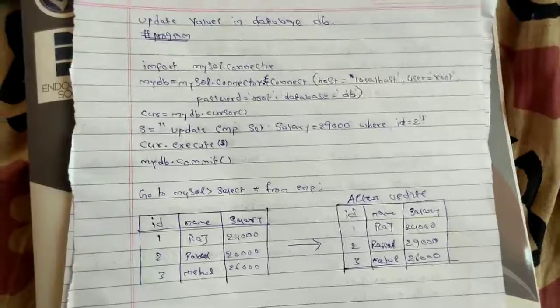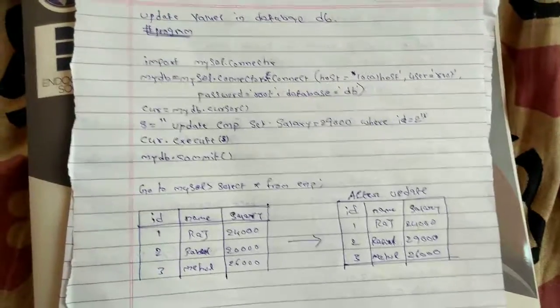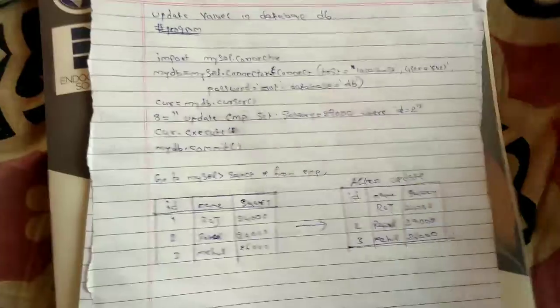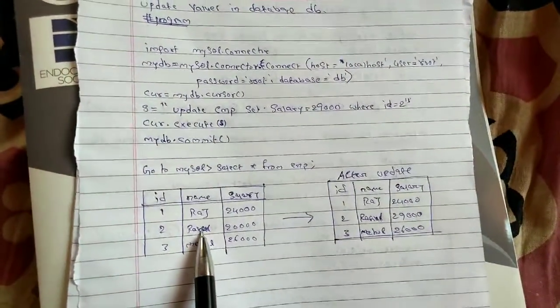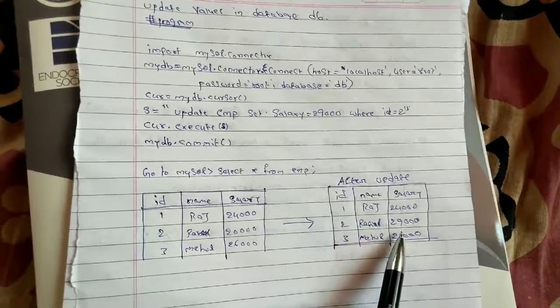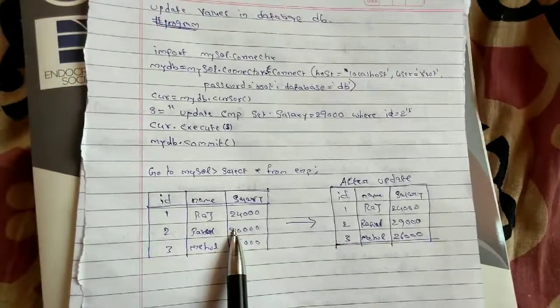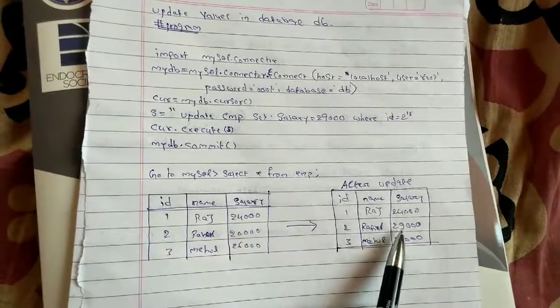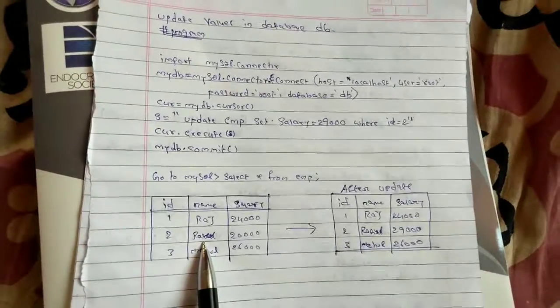Now in this video I am going to update the salary of an employee, that is Rahul, from 20,000 to 29,000. I will update the salary of 20,000 to 29,000 for employee Rahul.